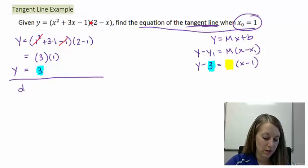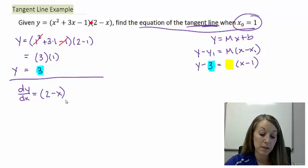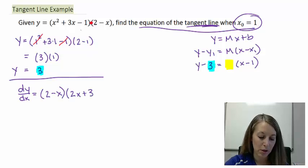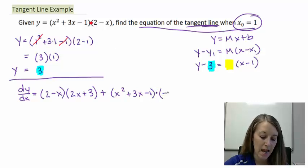So the derivative of this is equal to the original of the second times the derivative of the first. So let me do that derivative. x squared gives me 2x plus 3x. The derivative of that gives me 3. The derivative of my constant is 0. So the original of the second times the derivative of the first plus the original of the first times the derivative of the second. And the derivative of the second is a negative 1.